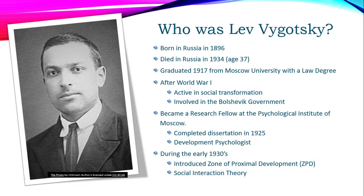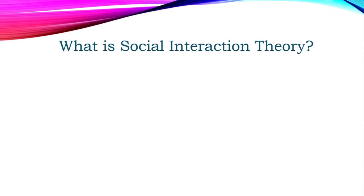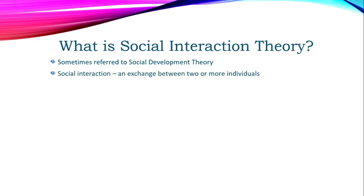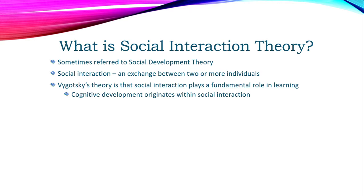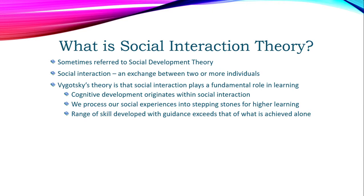Social interaction theory is sometimes also known as social development theory. Social interaction by definition means an exchange between two or more individuals. Vygotsky's theory is that social interaction plays a very big part in the fundamental role of learning — specifically, he believed that cognitive development actually originates in social interaction. We process our social experiences and use them as building blocks for higher learning, and any skill range we develop by using the knowledge of other people will exceed any skill range we could ever acquire alone.